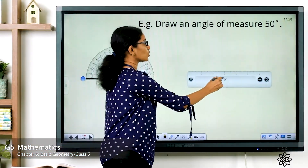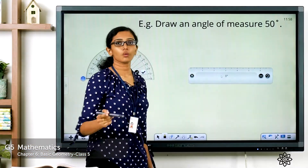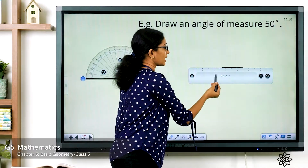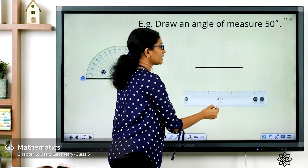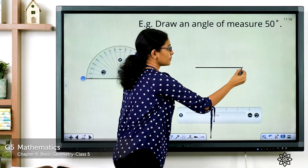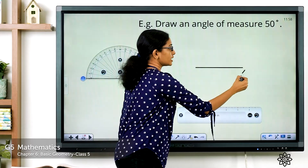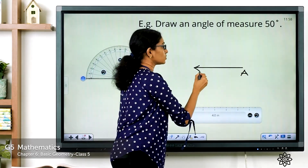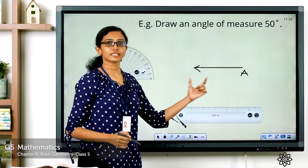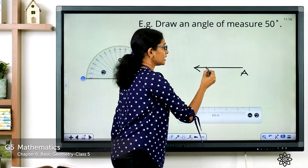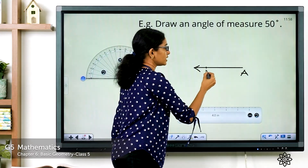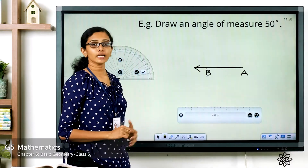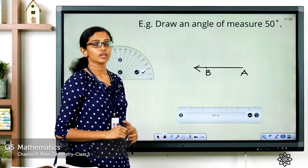The first step is to draw the lower arm. Draw a line using the ruler and mark the starting point — let it be A — with the arrow pointing towards the left, and mark another point on the arm. This is ray AB pointed towards the left.